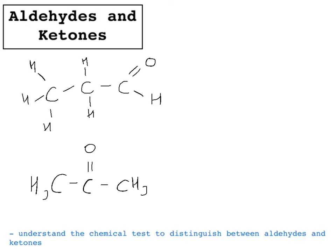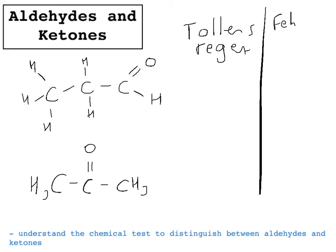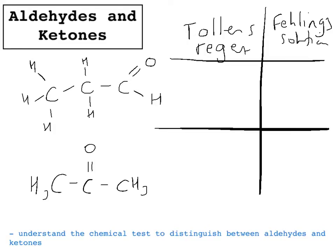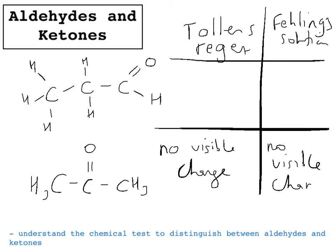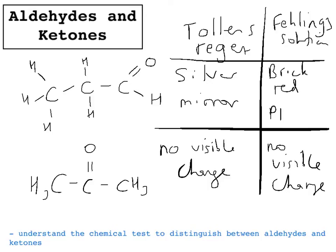Aldehydes can be oxidised easily with either Tollens' reagent or Fehling's solution. For a ketone, there won't be a positive reaction — you'll see no visible change for both reagents. The aldehyde molecule is being oxidised while these reagents are being reduced. When Tollens' reagent is reduced by an aldehyde, it forms a silver mirror. For Fehling's solution, you'll see a brick-red precipitate — importantly, it's a precipitate, a solid that forms, not a solution. Note that you cannot use these tests for alcohols; they will only oxidise an aldehyde.